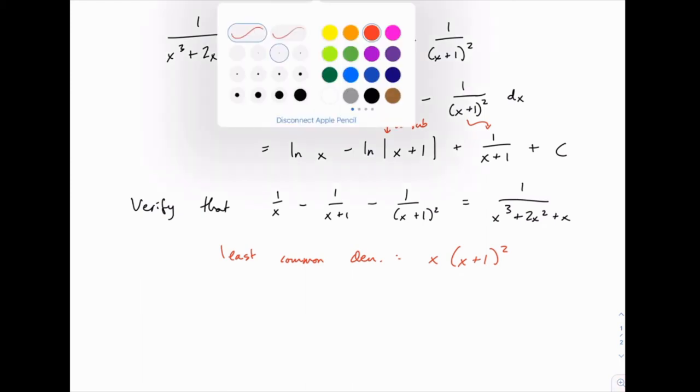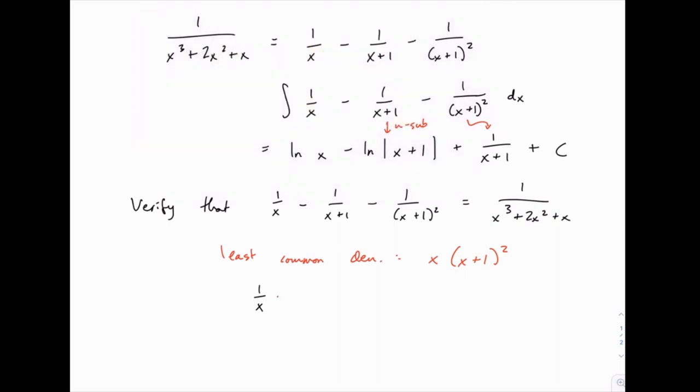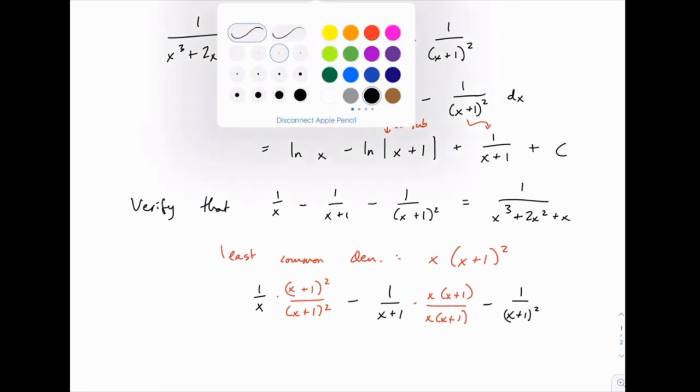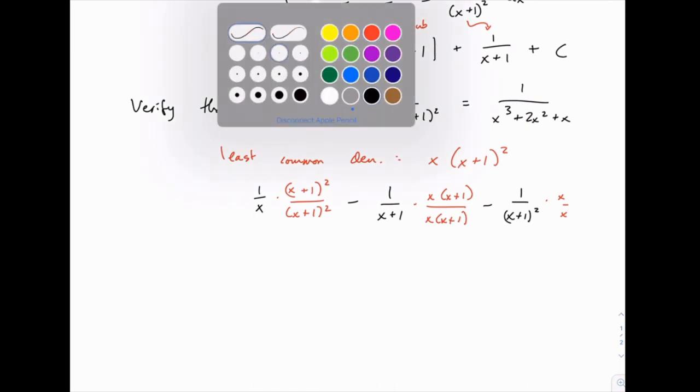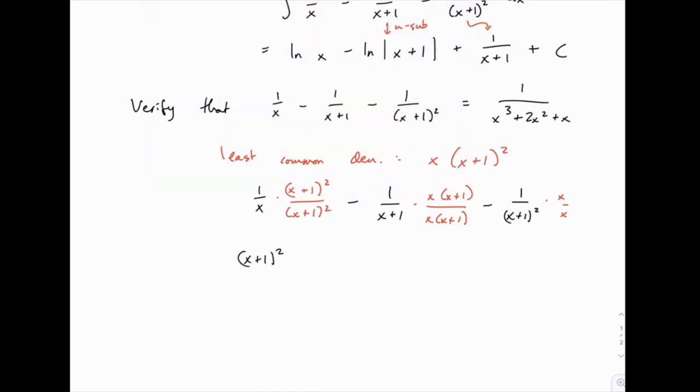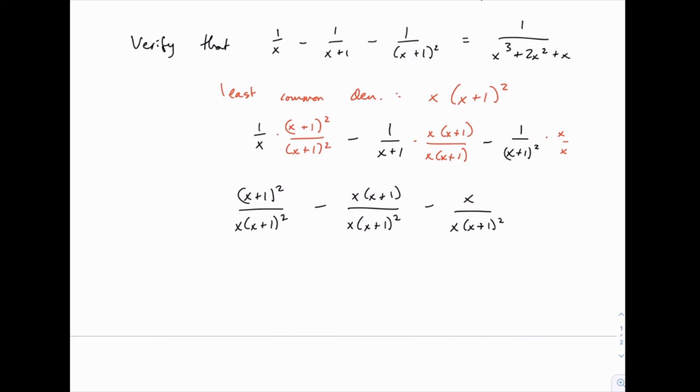In order to get that common denominator, we need to multiply the first fraction by x plus 1 squared on both the numerator and denominator. On the second fraction, we just need to multiply by x and x plus 1, and on the last fraction, we just need to multiply by x. After we do that, we have x plus 1 squared, and then x times x plus 1 here, and lastly x on the last fraction. So all of them have the common denominator and the numerators as shown. Once they have common denominators, we can combine them all, and as we do so, we'll expand out by multiplying x plus 1 squared and distributing the x here.